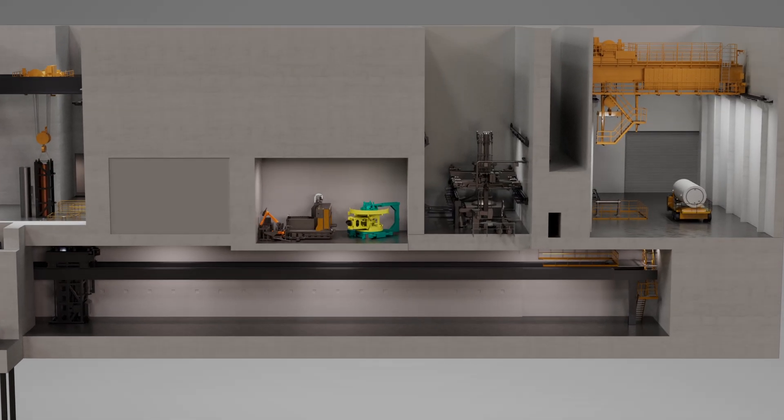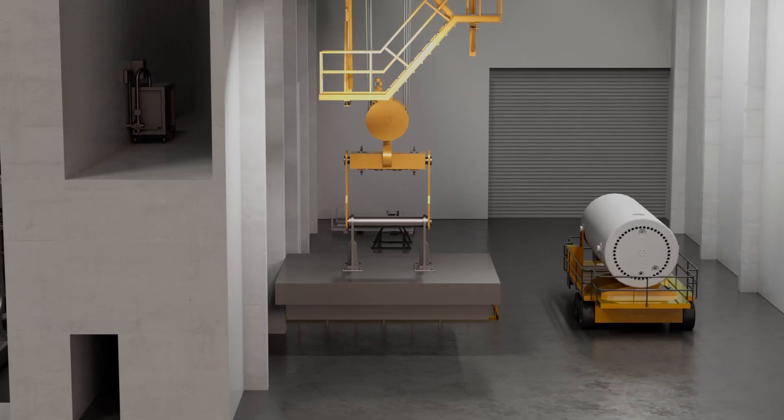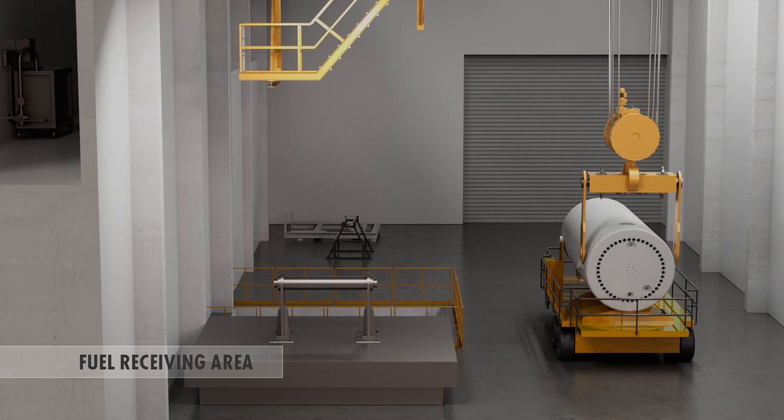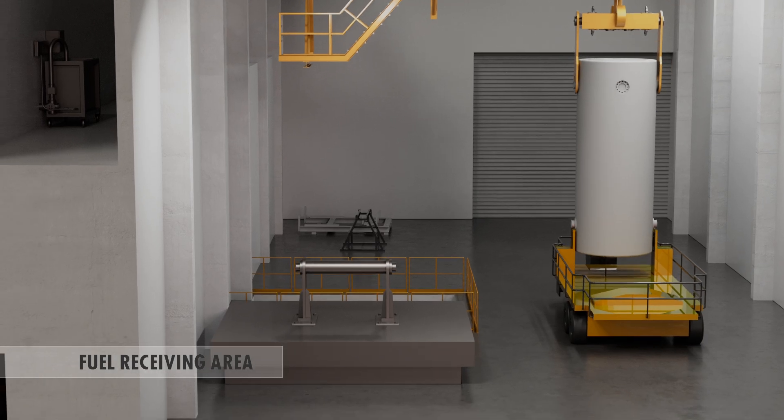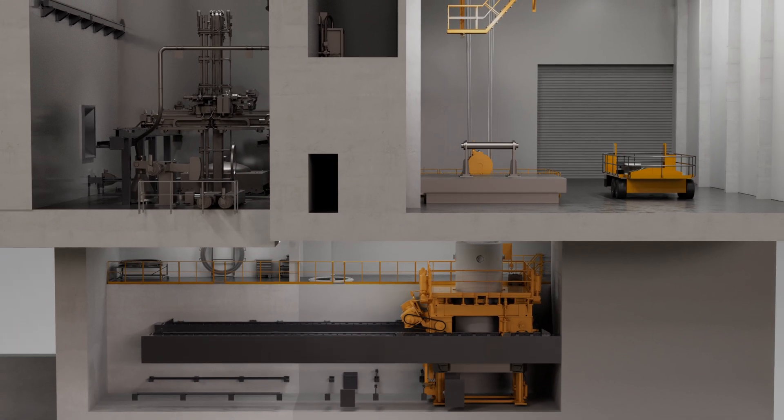The stored spent nuclear fuel is brought to the encapsulation plant in transport casks from Okiloto and Lovisa. The cask arrives at the fuel reception area of the encapsulation plant, where it is lifted onto the transport cask transfer trolley in the transfer corridor.